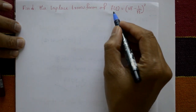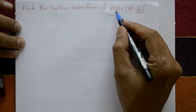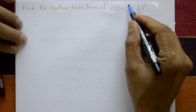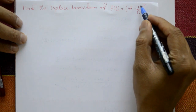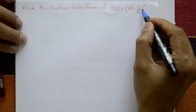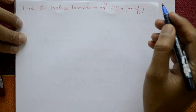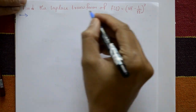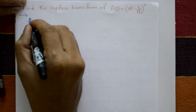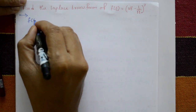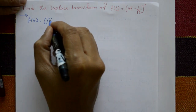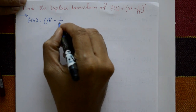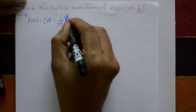Find the Laplace transform of f(t) = (√t - 1/√t)³. Given f(t) = (√t - 1/√t)³.